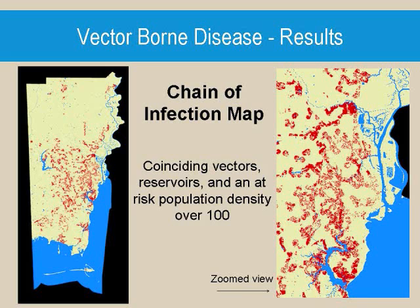This is easily changed to different densities, such as 75, 500, or 1,000 persons per square mile, to meet the partner's needs. The red represents areas that have all of the risk factors — infected birds, mosquitoes, and vulnerable persons — to create the full chain of infection.